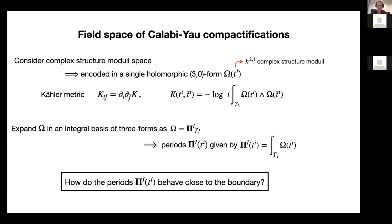So let me begin with this overview. For type IIb Calabi-Yau compactifications, the relevant field space is the moduli space of this Calabi-Yau manifold — in particular the complex structure moduli space. Here everything is described by just looking at a single holomorphic three-form on this Calabi-Yau manifold, and for instance the Kähler metric can be obtained just by taking derivatives of the Kähler potential, which can be expressed in terms of this three-form. A convenient way to think about this three-form is to expand it in terms of an integral basis for three-forms and view each of these periods as some kind of factor that varies over the moduli space.